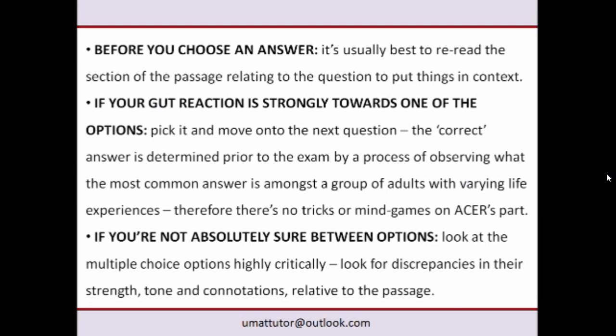If you're not absolutely sure and you're tossing up between two or three options, set aside your gut reaction and begin to look at them more critically. Look at each answer not for whether it's right — because they're probably all right to some extent — but look at them for how wrong they are. This is about differentiating between options based on their strength, their tone, and their connotations.